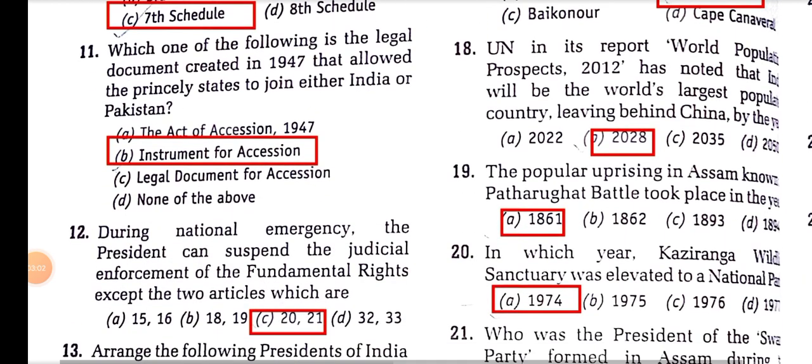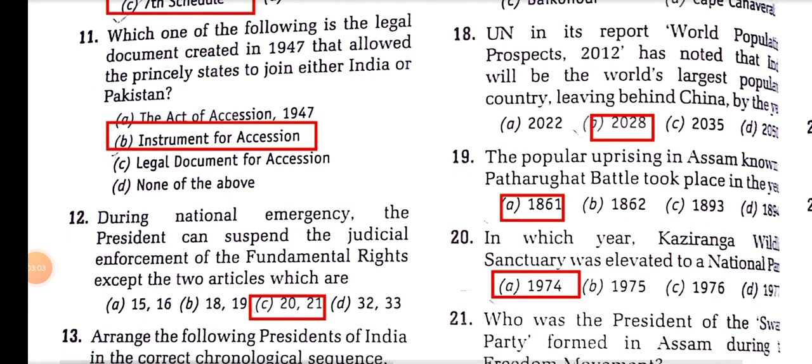Which one of the following is the legal document created in 1947 that allowed the princely states to join either India or Pakistan or remain independent? It is the Instrument of Accession, by Sardar Vallabhbhai Patel.